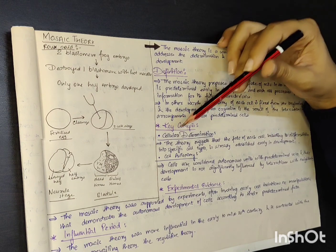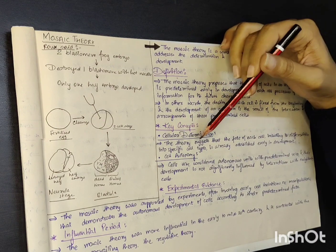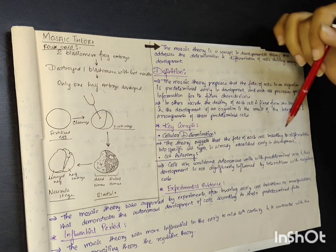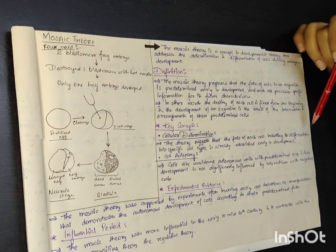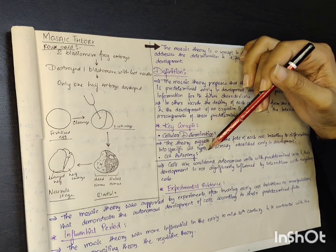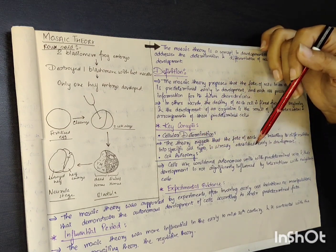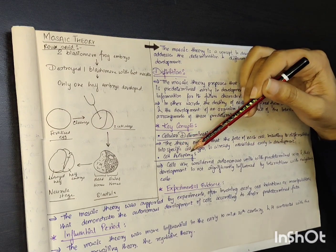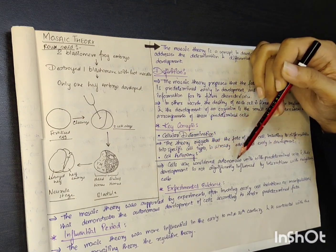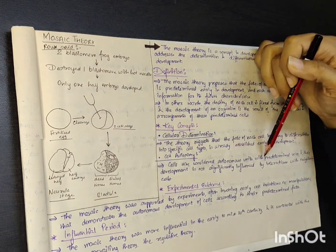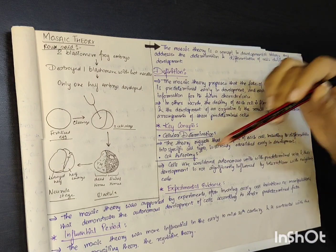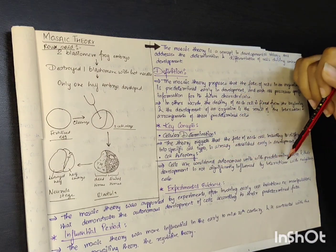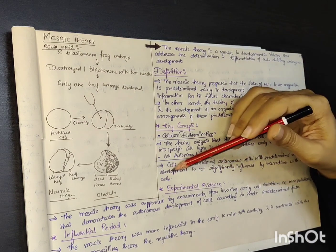Key concepts: Cellular determination — the theory suggests that the fate of each cell, including its differentiation into specific cell types, is already established early in development. Cell autonomy — cells are considered autonomous units with predetermined roles, and their development is not significantly influenced by interactions with neighboring cells.